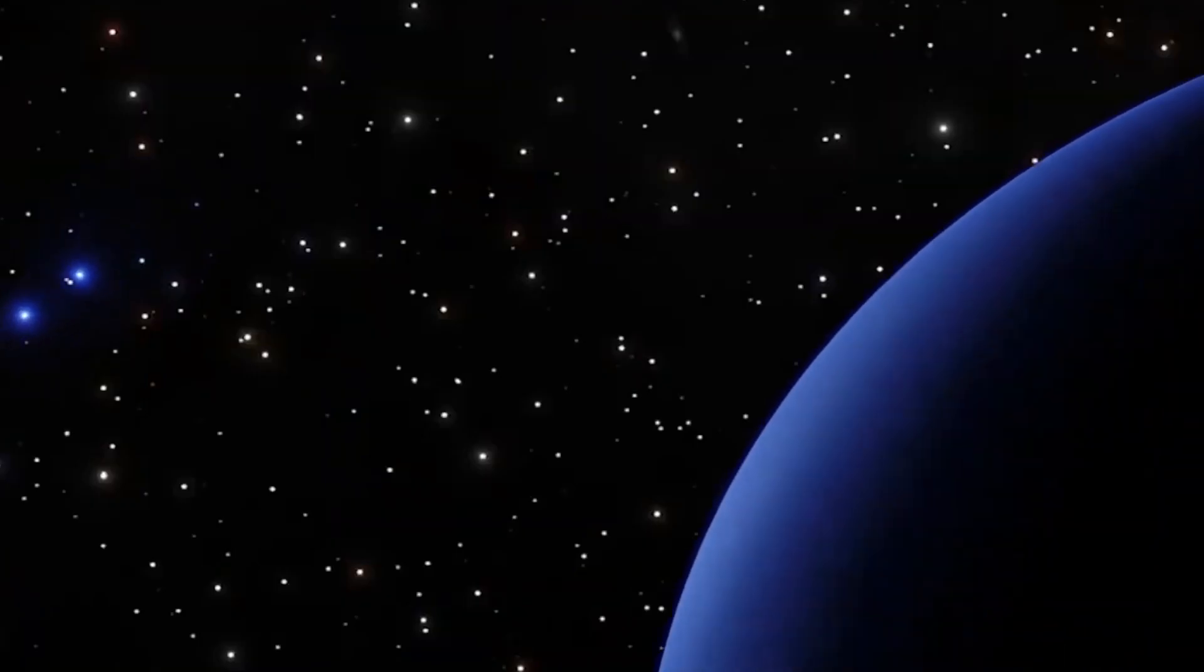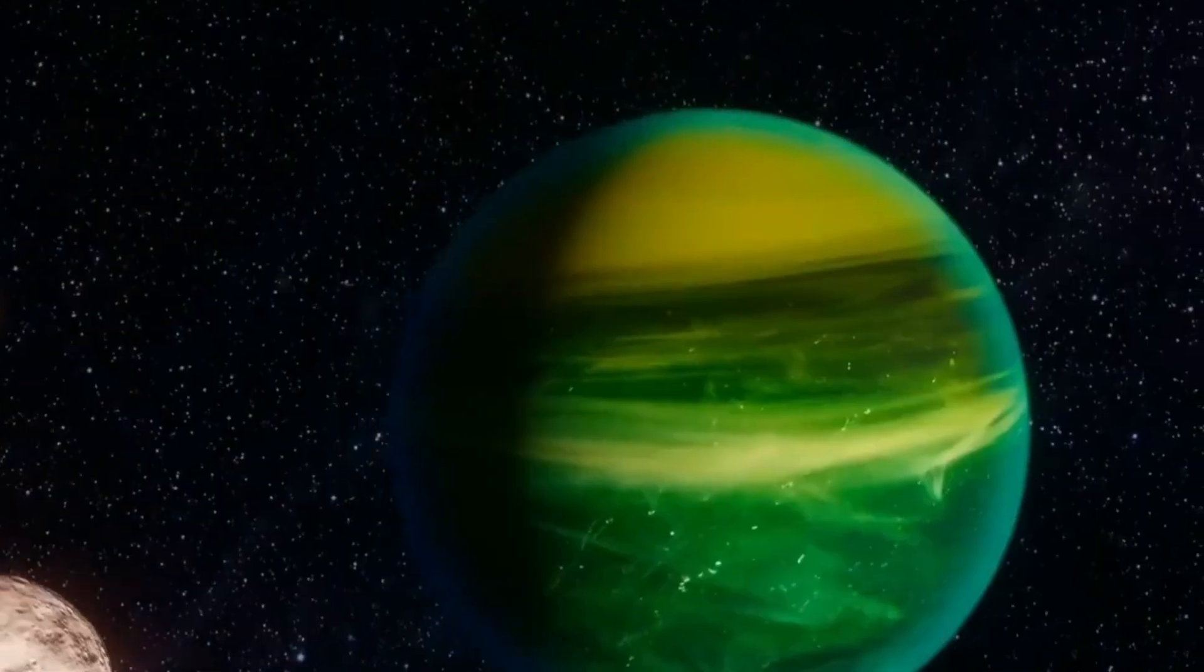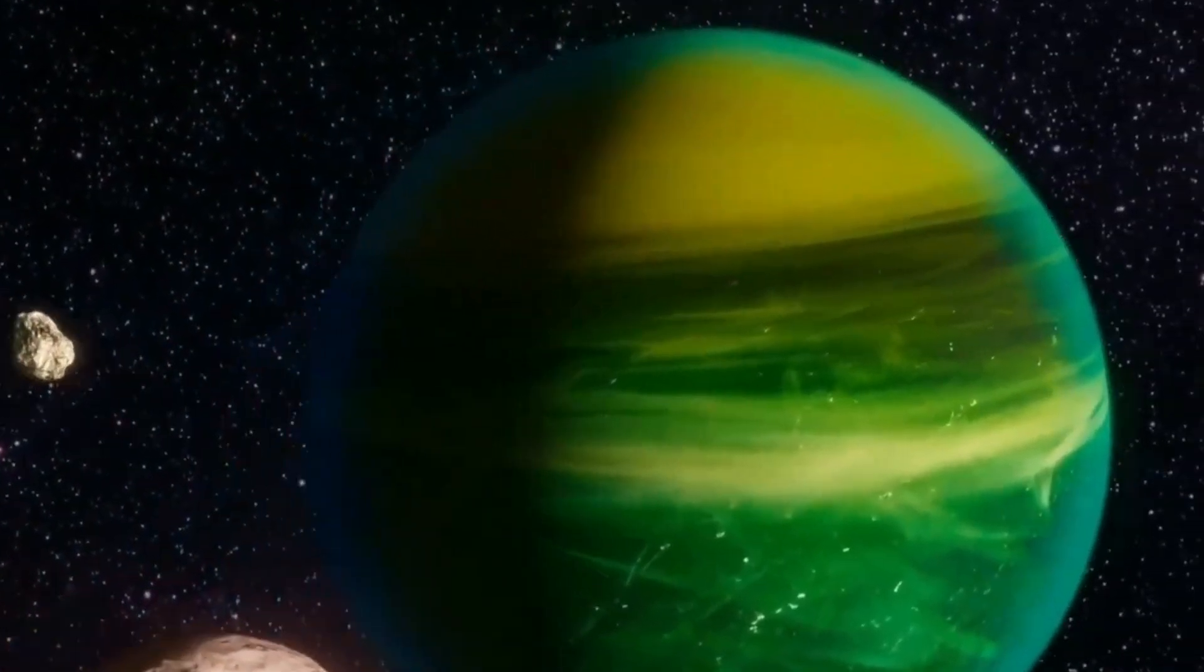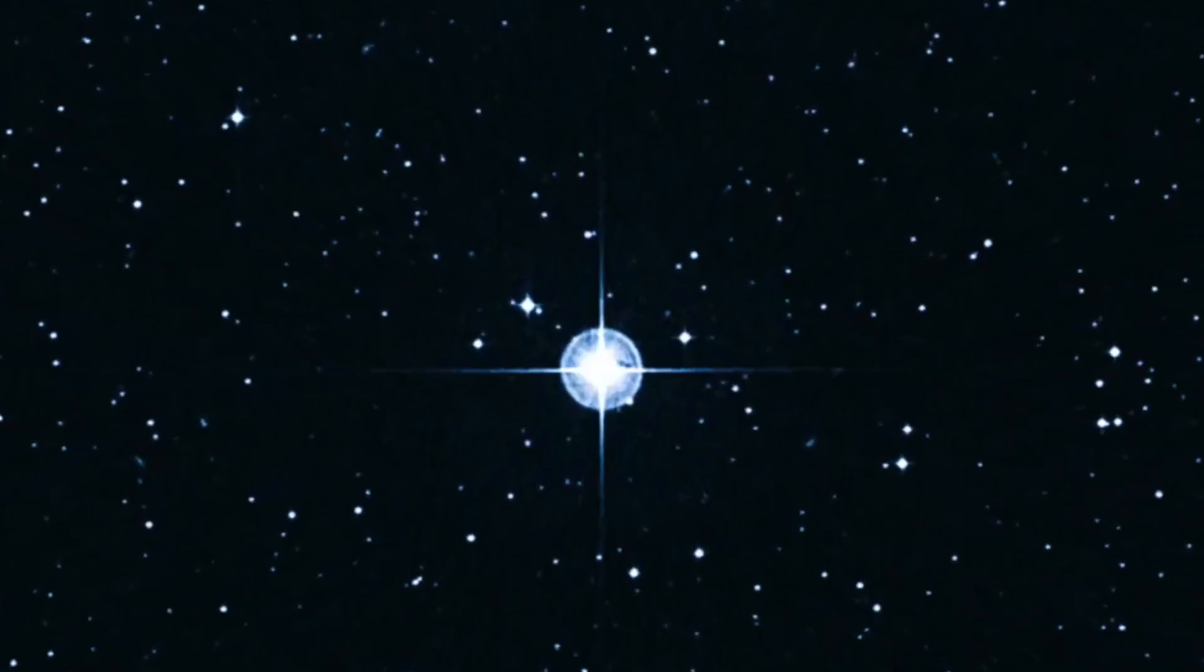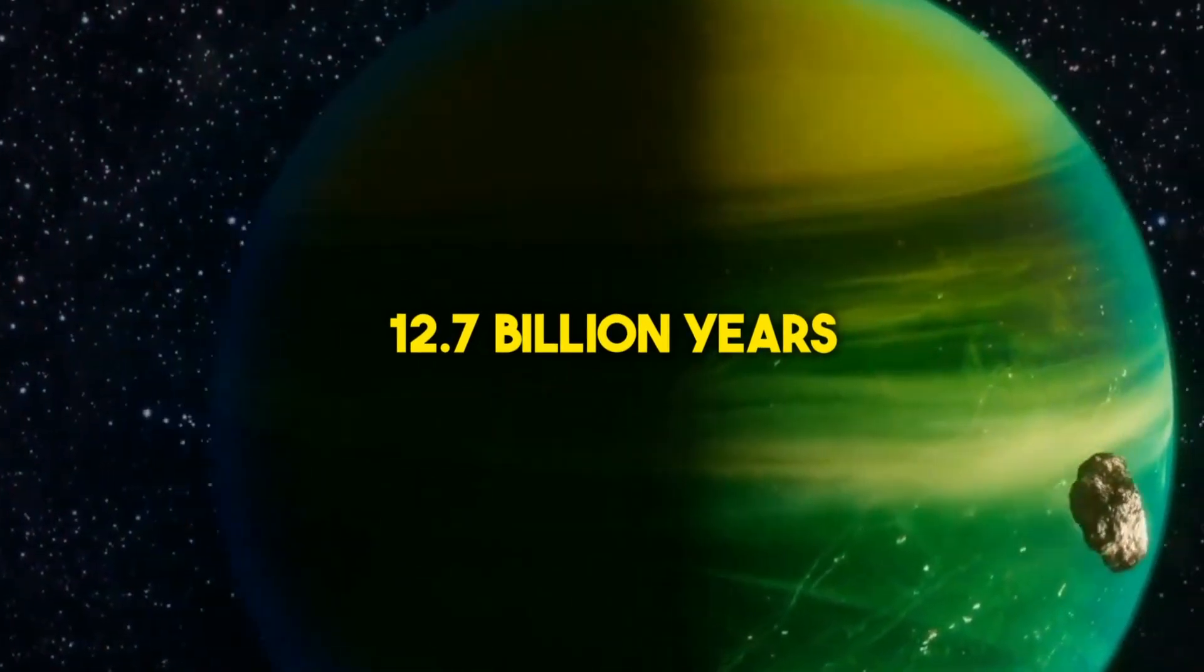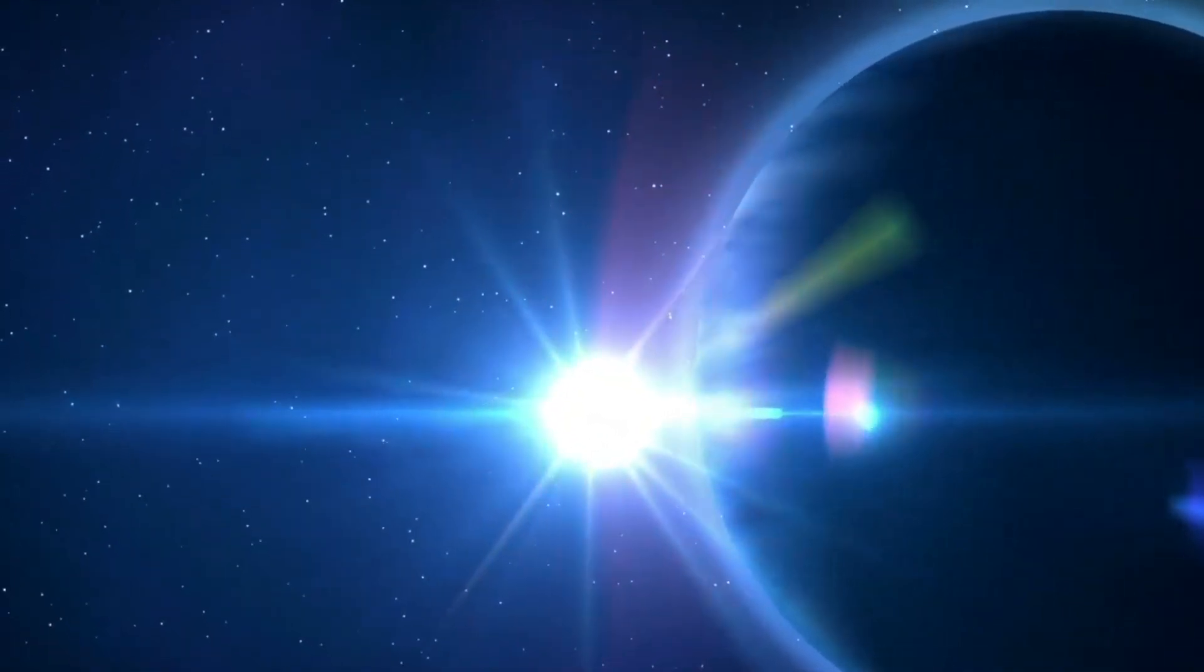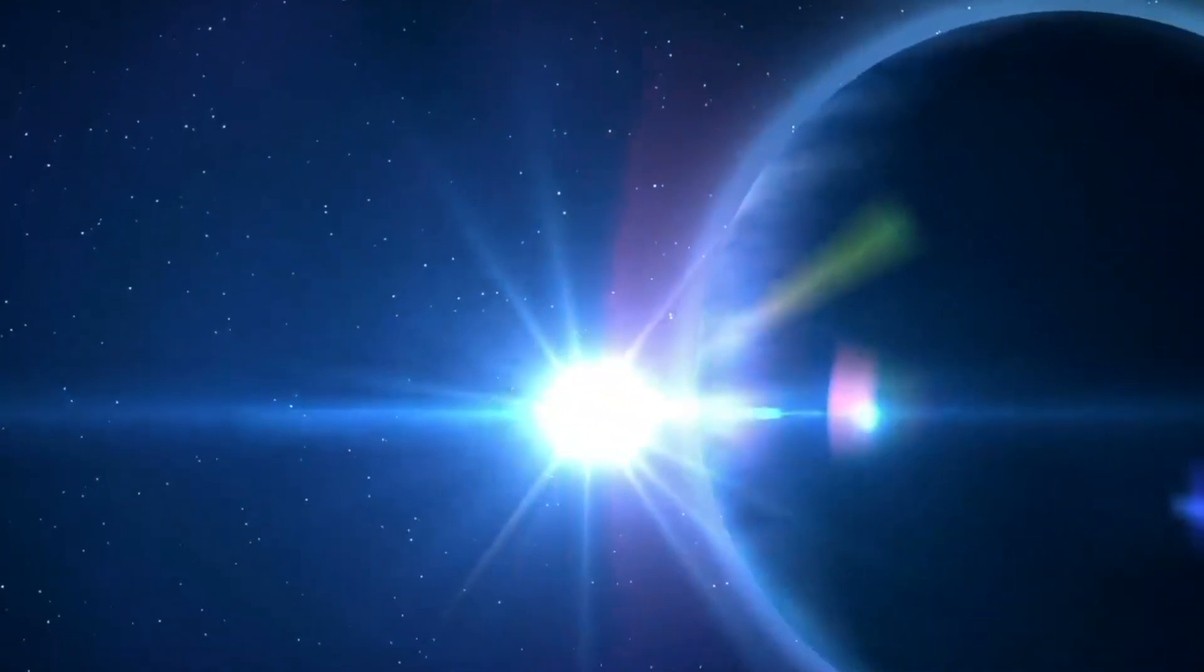Joining the ranks of these frosty realms is PSR B1620-26B, with its temperature dipping to a frosty minus 201.2 degrees Celsius. This ancient wanderer holds the title of one of the oldest exoplanets known, with an awe-inspiring age of 12.7 billion years. Despite its icy grip, PSR B1620-26B continues its timeless journey through the cosmos, a silent sentinel of the distant past.